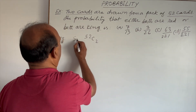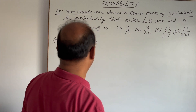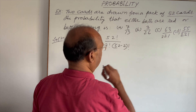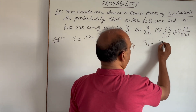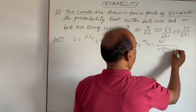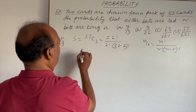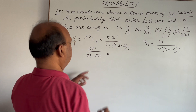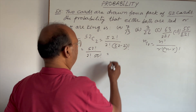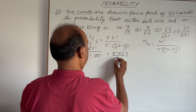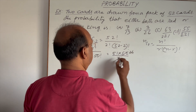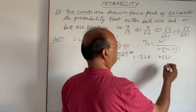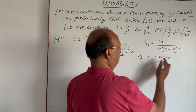Sample space equals 52C2. Let us simplify it. This equals 52 factorial by 2 factorial into 50 factorial, using the formula NCR = N factorial by R factorial into N minus R factorial. The 50 factorial cancels out, giving us 51 × 52 divided by 2, which is 26 × 51 = 1326. So the number of elements in the sample space is 1326.